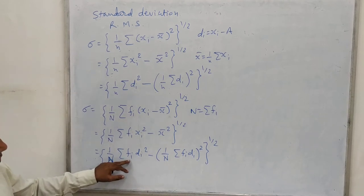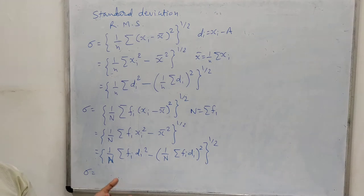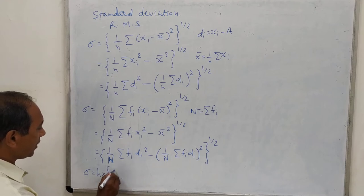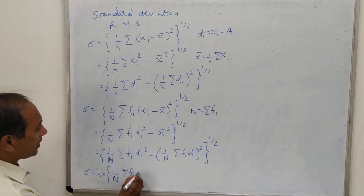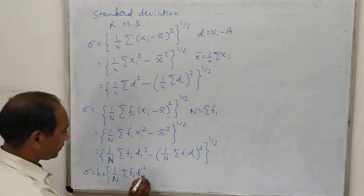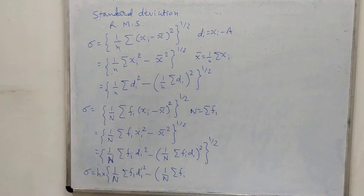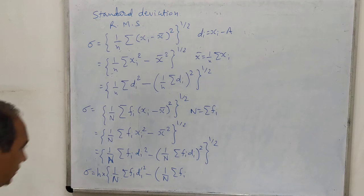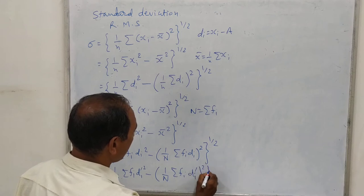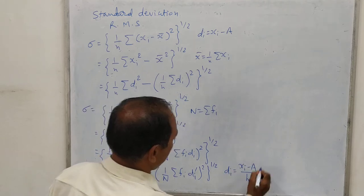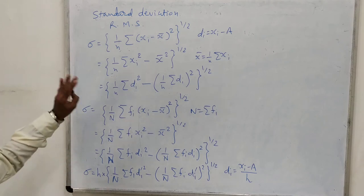We have also written the formula in the form of fi di square: sigma square equals 1 upon N times sigma fi di square minus (1 upon N times sigma fi di) whole square, raised to 1 half. For grouped frequency distribution, we can use xi values as mid values of the intervals. But if we don't want mid values and use the intervals directly, we multiply by h, giving di dash equal to (xi minus a) upon h, where h is the width of the interval.